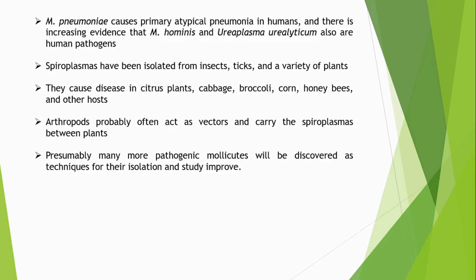Mycoplasma pneumoniae causes primary atypical pneumonia in humans, and there is increasing evidence that Mycoplasma hominis and Ureaplasma urealyticum are also human pathogens. Spiroplasmas have been isolated from insects, ticks and a variety of plants; they cause diseases in citrus plants, cabbage, broccoli, corn, honey bees and other hosts. Arthropods probably often act as vectors carrying spiroplasmas between plants.